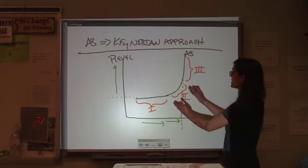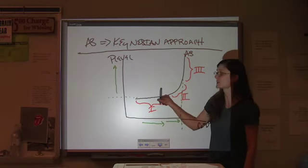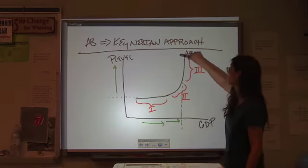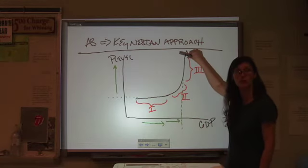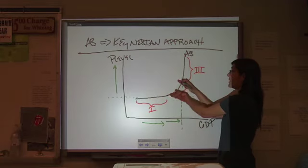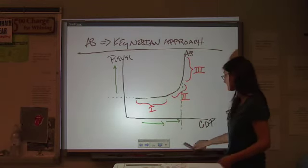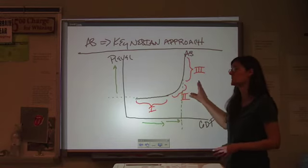Ideally, we want to stay somewhere in this range. We don't want to have massive unemployment. We don't want to have runaway inflation, which are the two extremes here. Full employment is somewhere in this area. Okay? This is the Keynesian model.